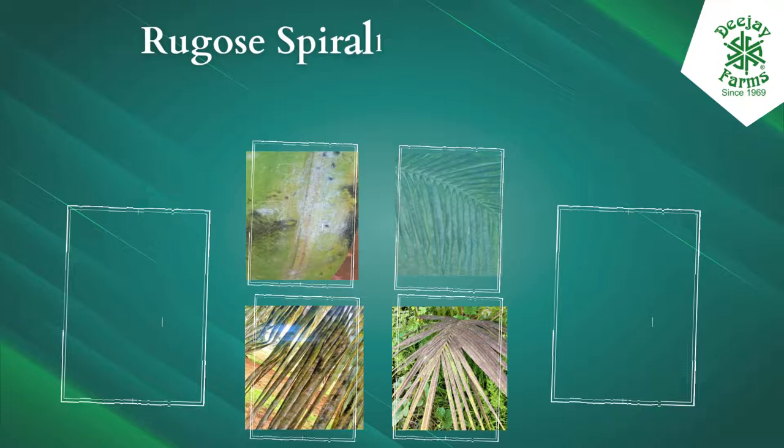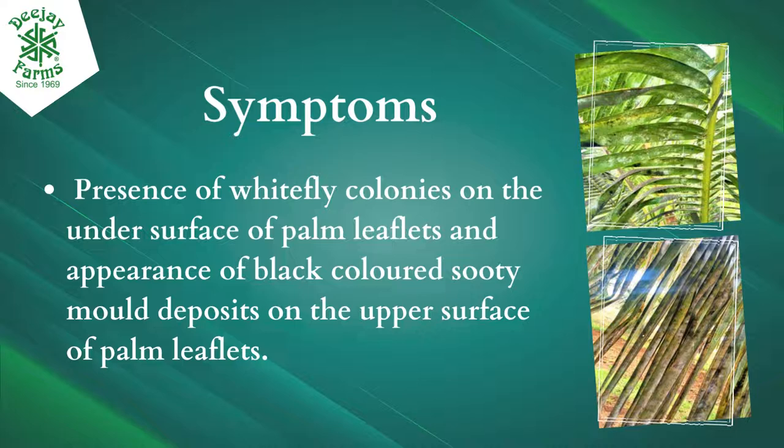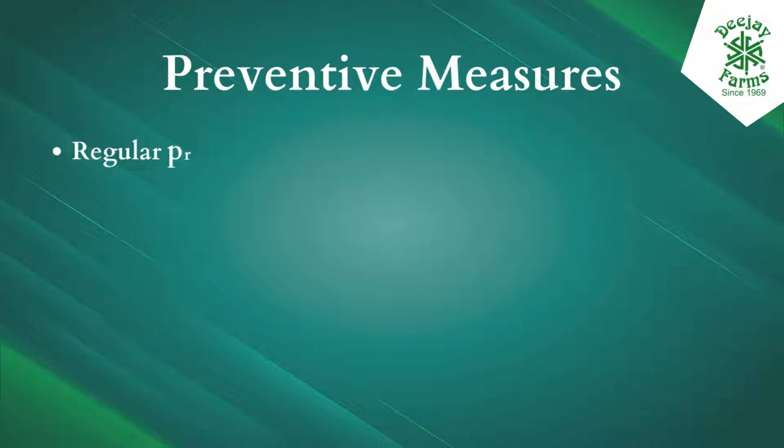Spiraling whitefly (Aleuroticus rudiparculatus): symptoms include presence of whitefly colonies on the undersurface of palm leaflets and appearance of black-colored sooty mold deposits on the upper surface of palm leaflets.